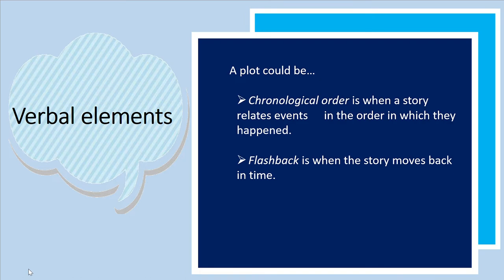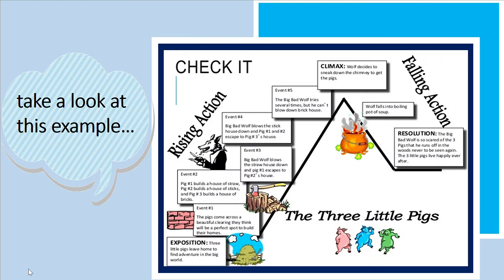Take a look at this example of plot using the story of the three little pigs. It has its exposition, rising action where the conflict arises, the climax where the wolf decides to sneak down the chimney, the falling action introducing the almost-ending, and then the resolution presenting the end of the story.